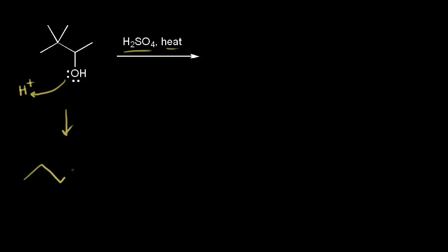Drawing the intermediate: we have our carbon chain with two methyl groups, and the oxygen now has two bonds to hydrogen with one lone pair and a plus one formal charge — it picked up the proton from sulfuric acid. This step happens first because it forms a better leaving group: water is a much better leaving group than the hydroxide anion. Next, the electrons in the C–O bond come off onto oxygen, water leaves, and a carbocation forms on the carbon in red.